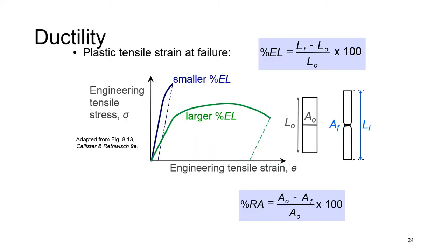Next, when we compare engineering stress versus engineering strain of different materials, of course we don't see exactly the same behavior. We notice that in some materials we see more extension or deformation or strain up to the point of failure compared to others. This is related to the ductility of the materials. The more a material deforms under a certain load, the more ductile it is.